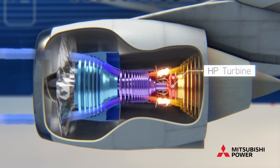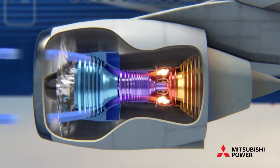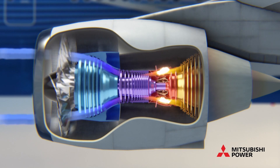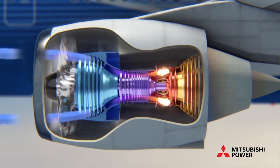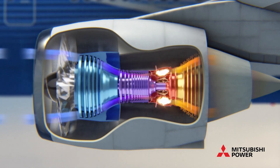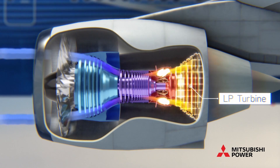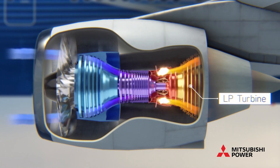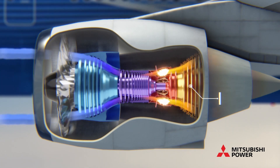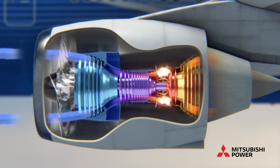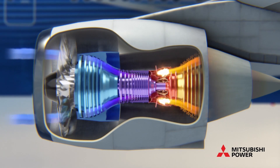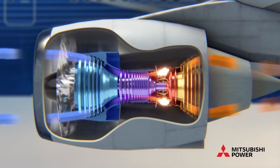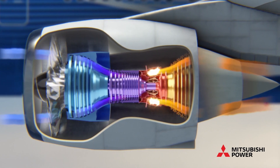The HP turbine connects to the HP compressor by a hollow outer shaft that drives the rotation of the HP compressor blades. The expanding exhaust gases then pass through the low pressure, or LP, turbine, causing its blades to rotate. The LP turbine connects to the LP compressor and the fan by an inner shaft driving their rotation. The exhaust gases are then directed out the back of the engine, enhancing thrust.